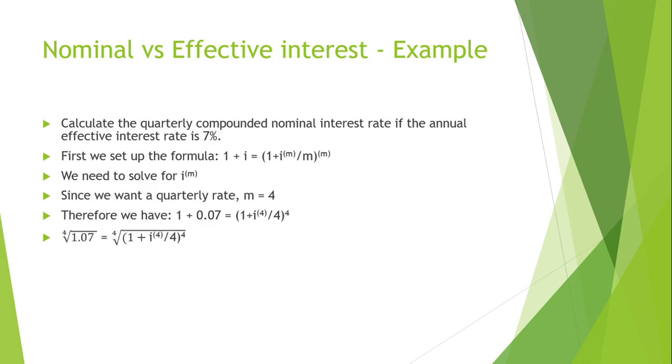So, while using simple mathematics, you just take the root of 4 on both sides just to eliminate the power of 4 on the right-hand side. Then, rounding to 9 decimals, you get to that answer. So, then, you could just follow basic substitution principles to get the i4 alone. And take it one step further. And then, at the end, we get that the quarterly compounded nominal interest rate would be 6.82%.